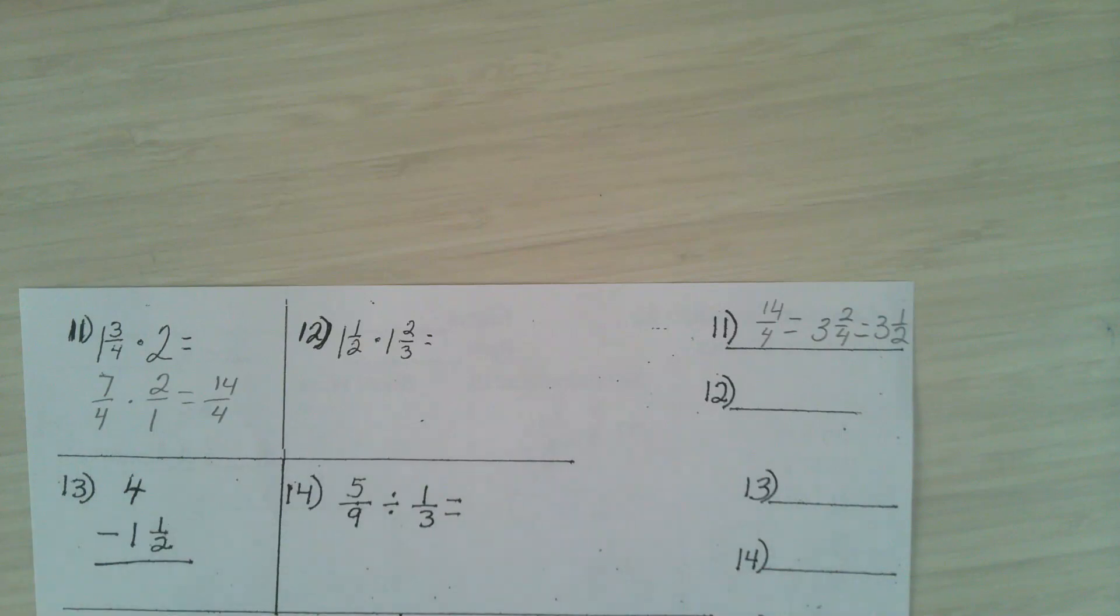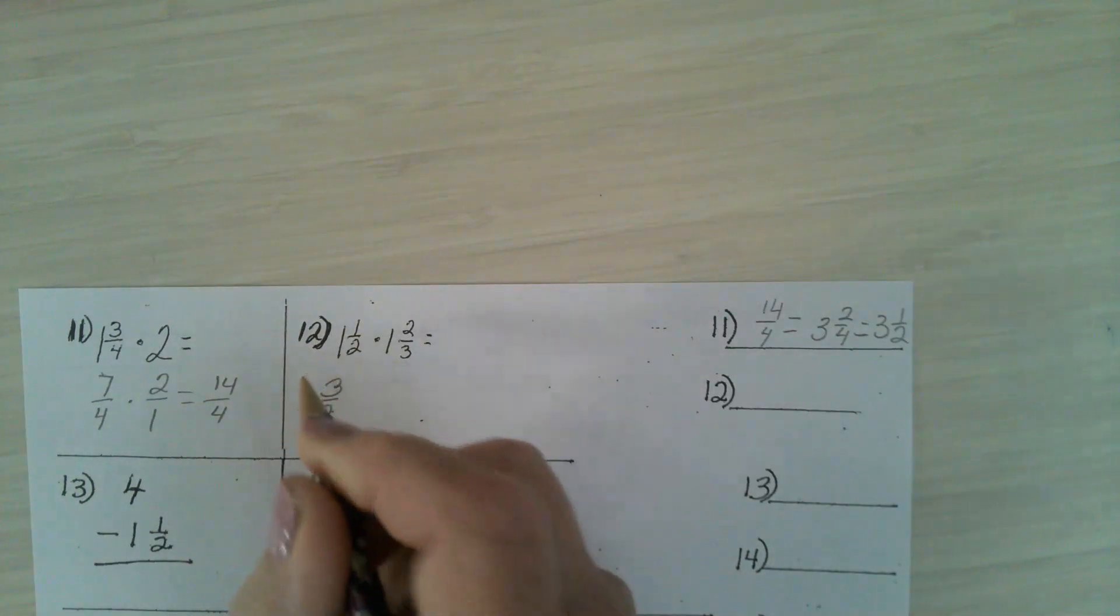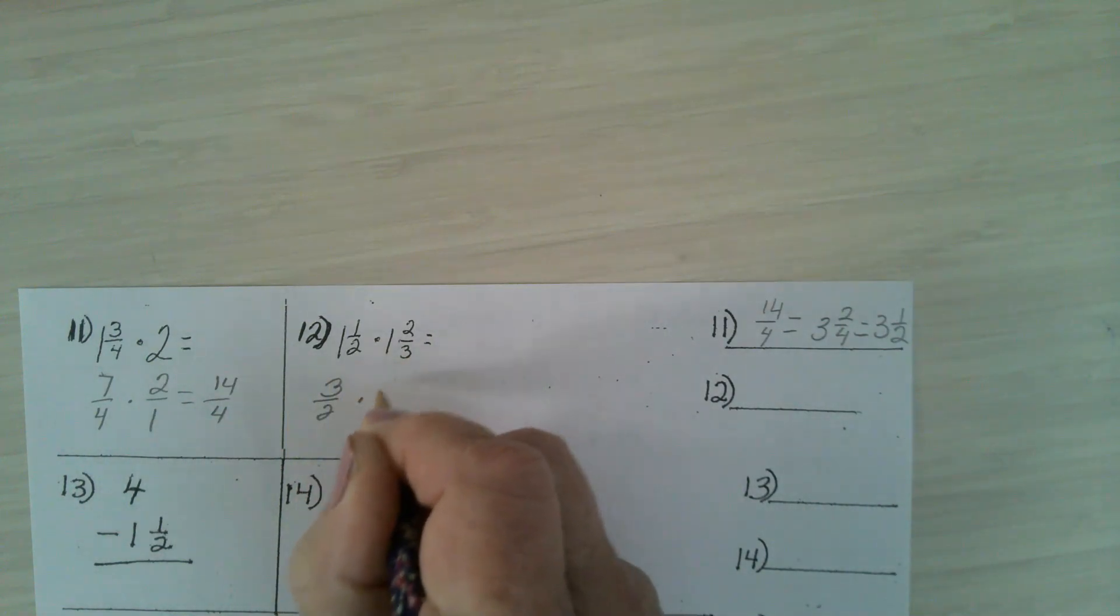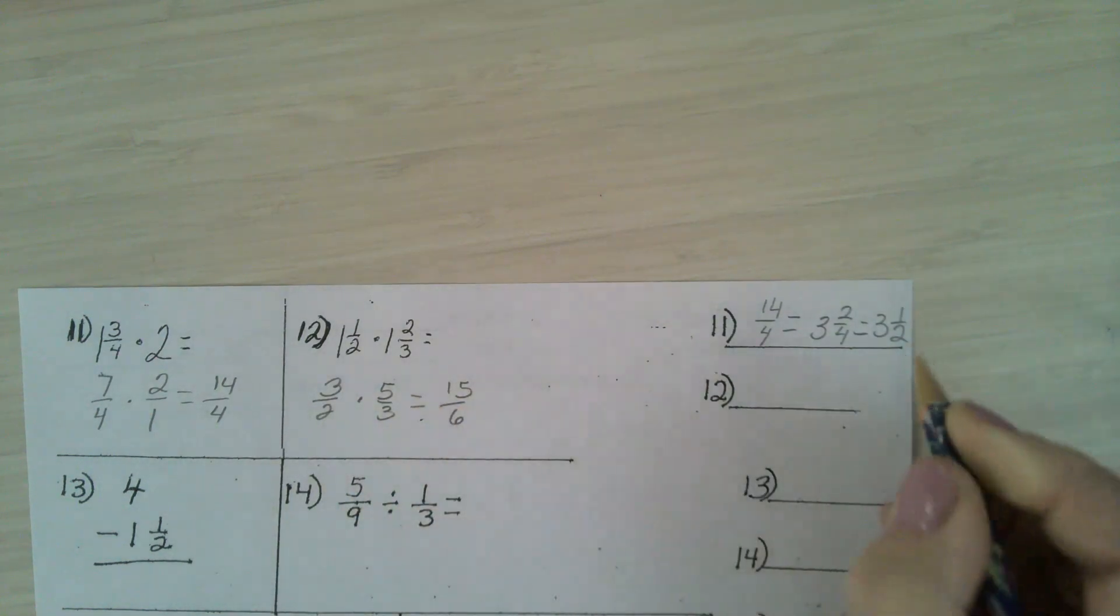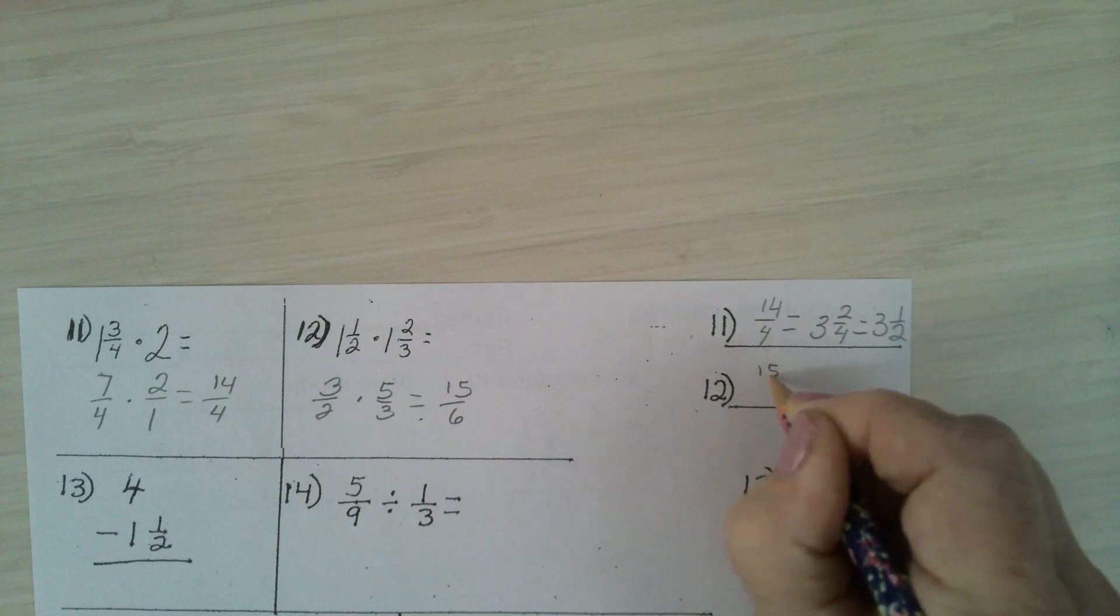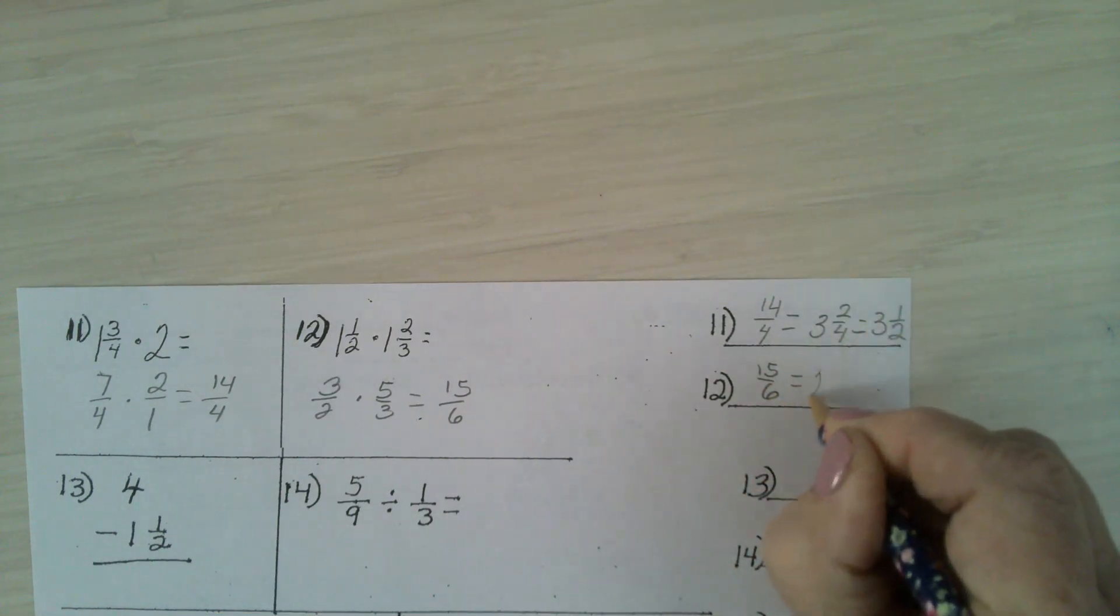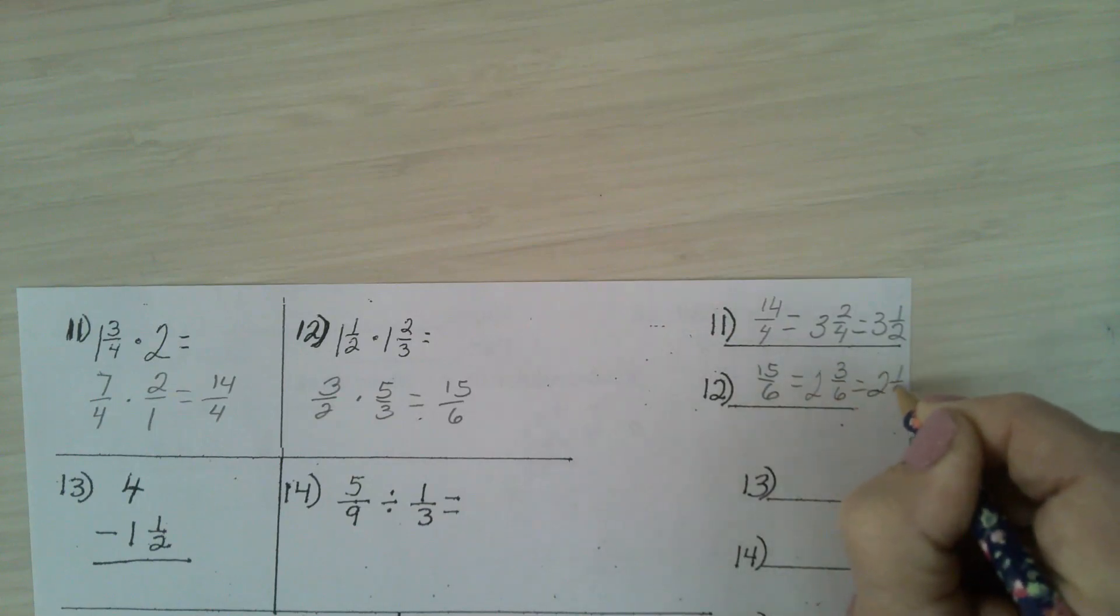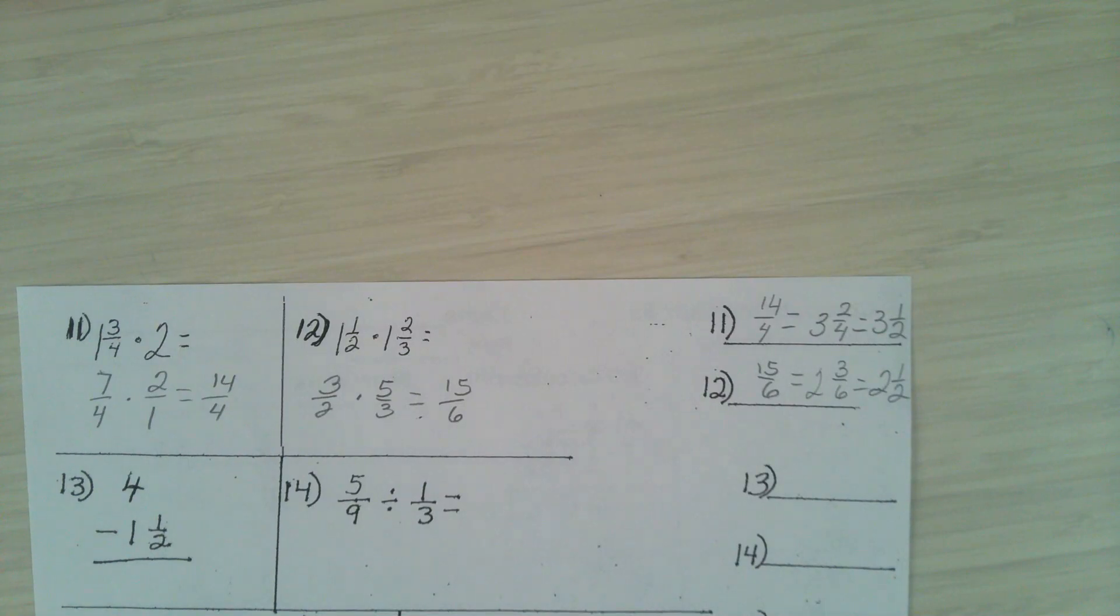In number 12, you're going to have 3/2. You multiply, add, and put it on top times 5/3. You will have 15/6. That will simplify to 2 and 3/6 or 2 and 1/2. Any questions?